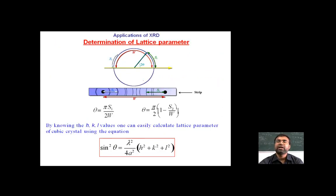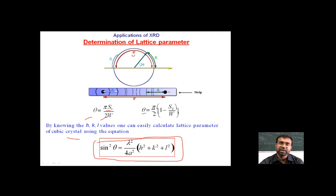The determination of lattice parameters by application of XRD: from the film we can find s1, s2, and w. By knowing the hkl values, one can calculate the lattice parameter of a cubic crystal using θ = π·s1/(2w) and θ = π·(1 − s2/w)/2. Simplifying, sin²θ = λ²/(4a²) × (h² + k² + l²).